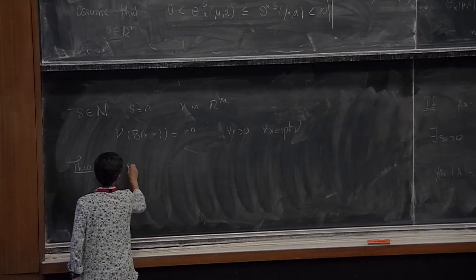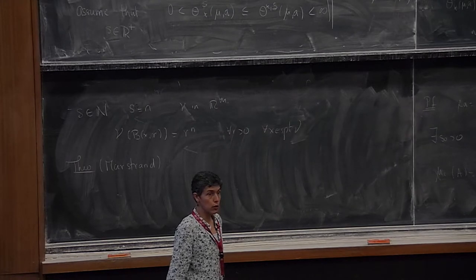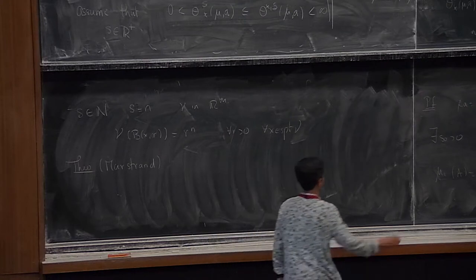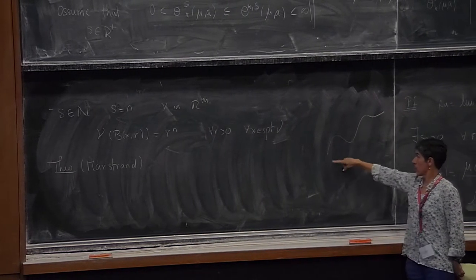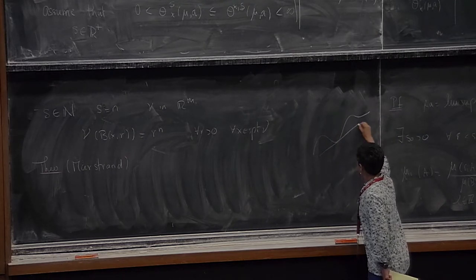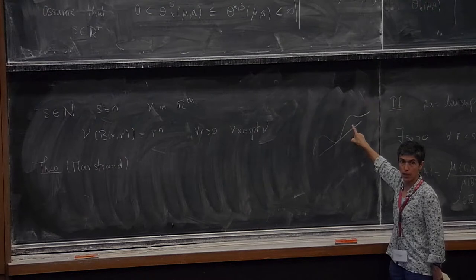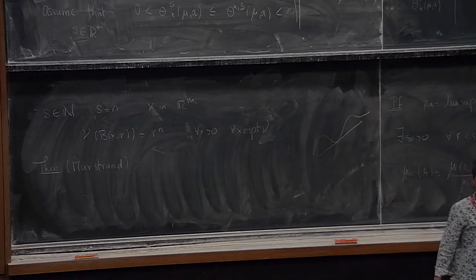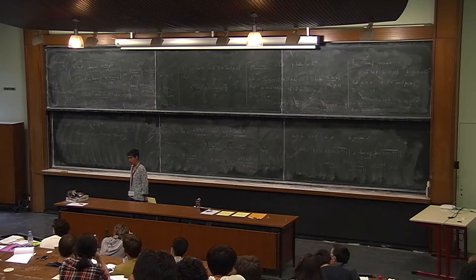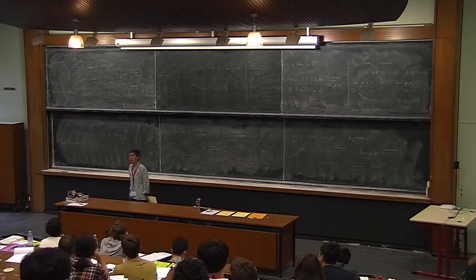Let me state Marstrand's theorem. The support of mu and the support of a tangent measure are completely different. For example, if my measure mu is arc length on a curve, when I blow up at a point the tangent nu is supported on a line and is a multiple of the Lebesgue measure there. Such an s-uniform measure which is not flat was constructed by Kowalski and Price—the only known example. I don't want to tell you what it is now because we still have almost an hour to go—I don't want to kill the suspense.